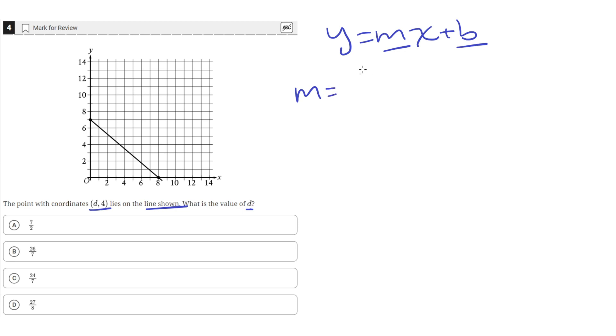So to find the slope, we just find the change in y over the change in x, or the rise over the run. To do that, we need two points on the line.